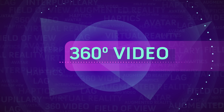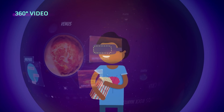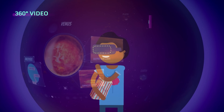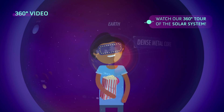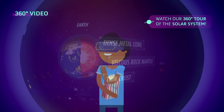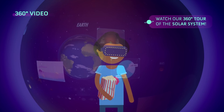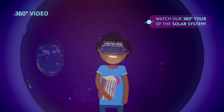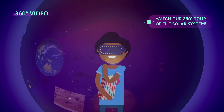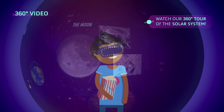360 video is not the same as virtual reality. It allows the viewer to look around a spherical 360 degree video, transporting them into a new place or space. Unlike VR, these experiences are more passive and do not allow for moving around or interacting with the video environment.